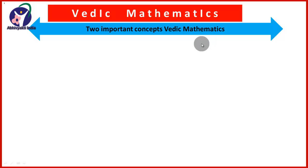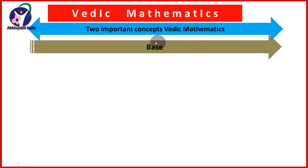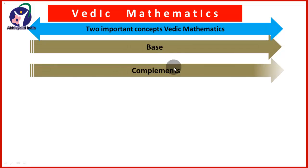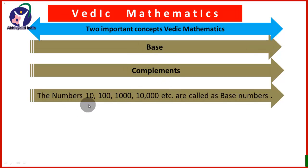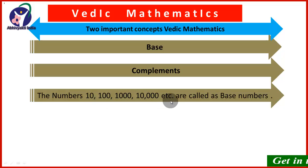The first concept is base and the second concept is complements. The numbers 10, 100, 1000, 10,000 and so on are called as the base numbers.